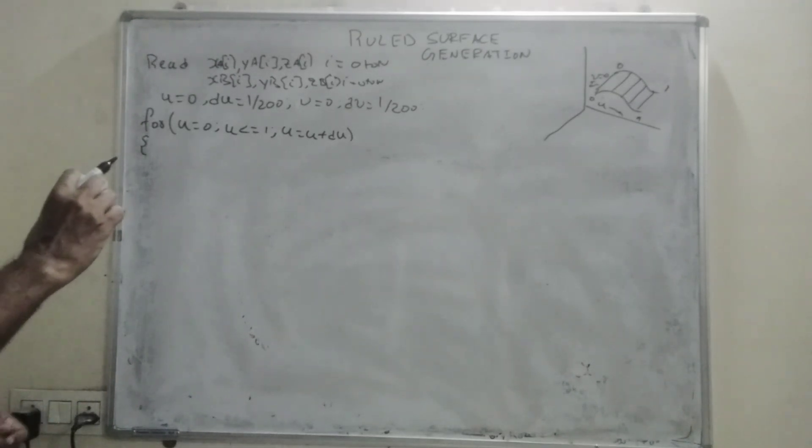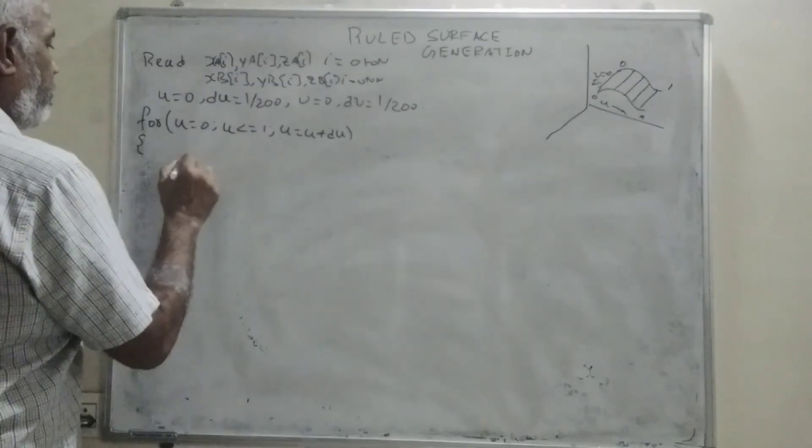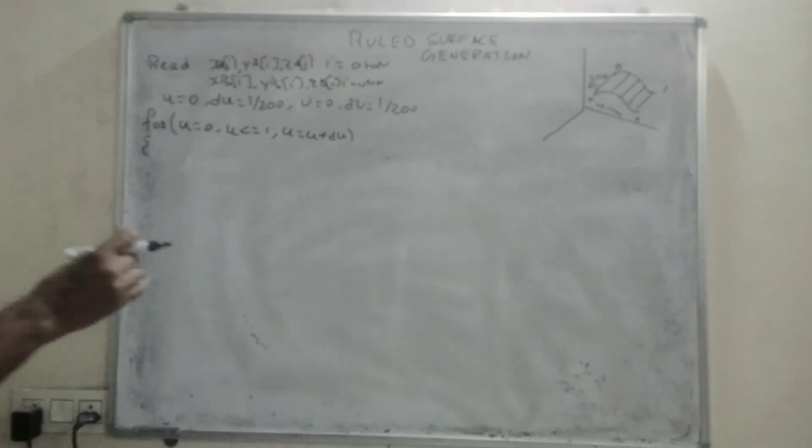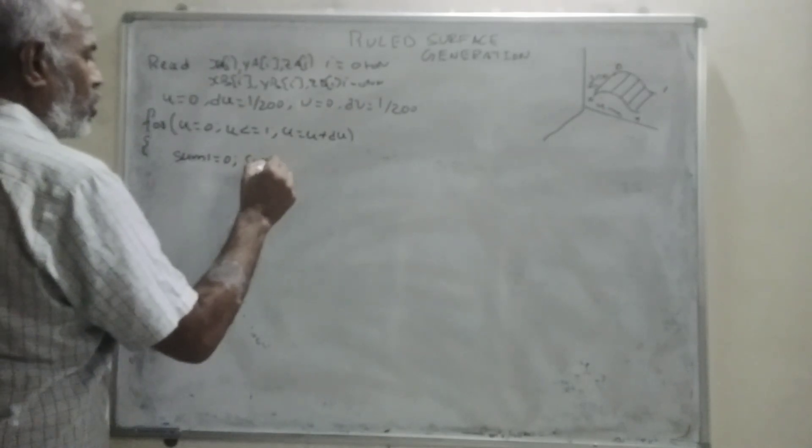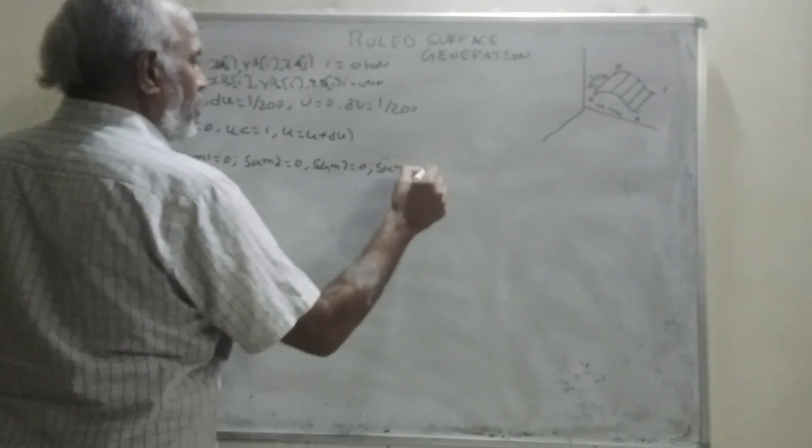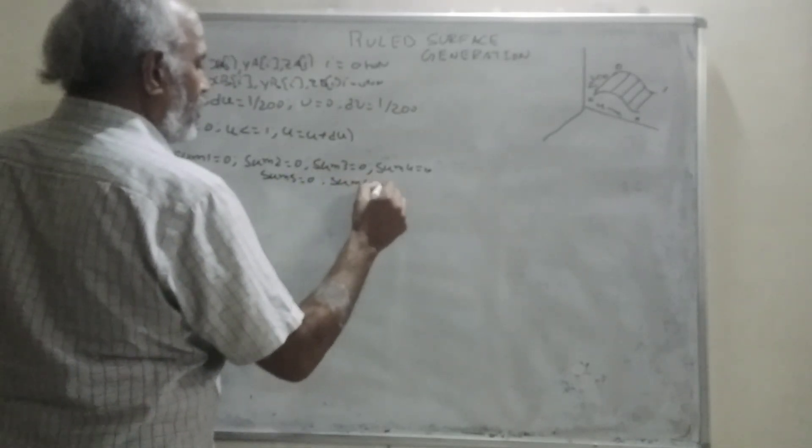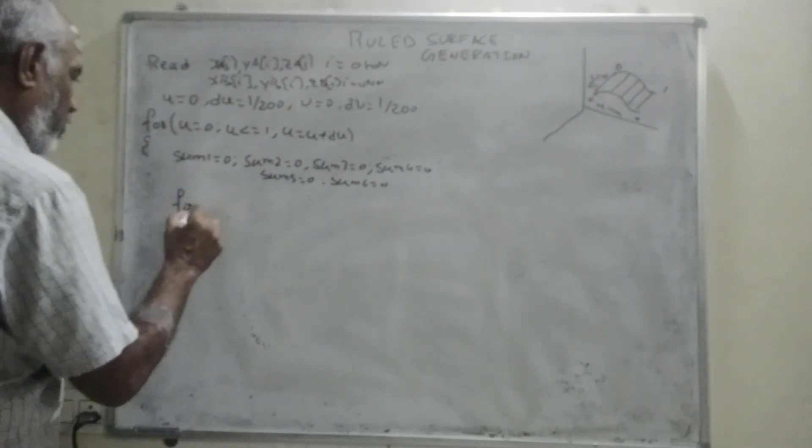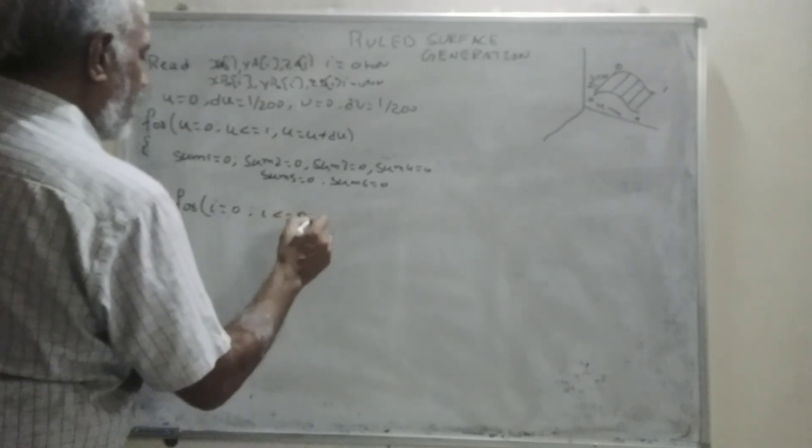Now we are meant to generate two points, one point on this curve and the other point on that. Here also, we have to take six sums. Sum1 equals 0, sum2 equals 0, sum3 equals 0, sum4 equals 0, sum5 equals 0, sum6 equals 0. Now, here I am trying to take another for i equals 0, i less than or equal to n, i plus plus.